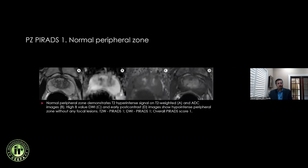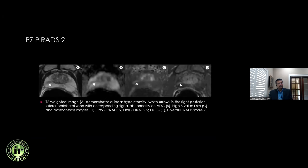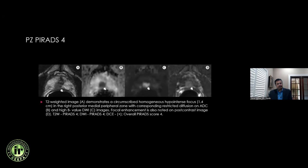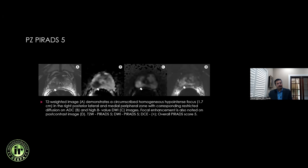In the peripheral zone, a normal gland shows no abnormality — perhaps some linear findings representing sequelae of prostatitis. A linear or arc-shaped focus in the PZ with some sequence abnormality is still a benign finding due to its shape. A PI-RADS 3 PZ lesion has a non-circumscribed, ill-defined focal abnormality with abnormality on only one sequence — mild ADC hypointensity without high B-value hyperintensity. PI-RADS 4 has a focal lesion with restricted diffusion and enhancement. PI-RADS 5 is similar but greater than 1.5 cm.